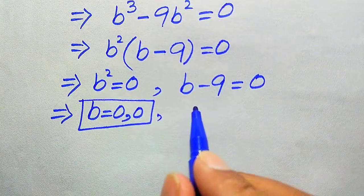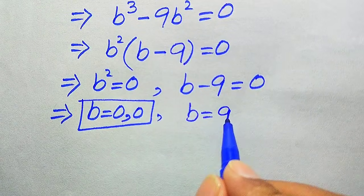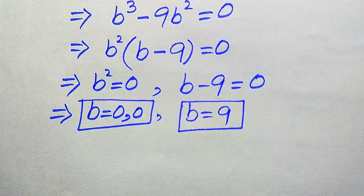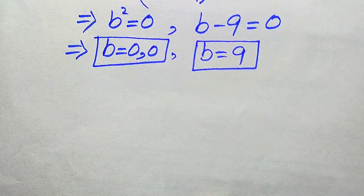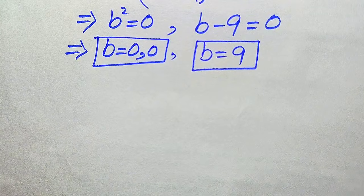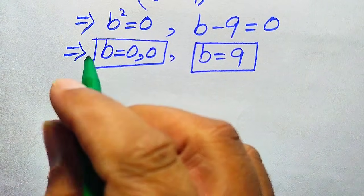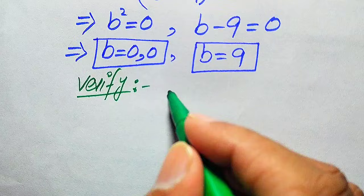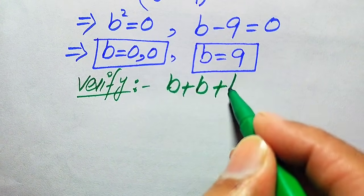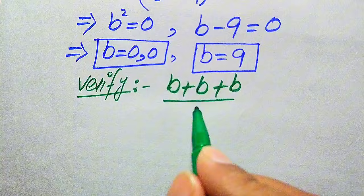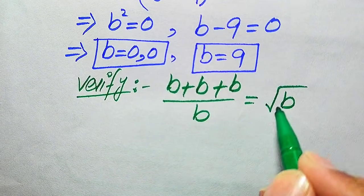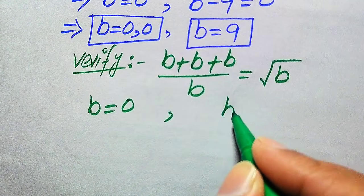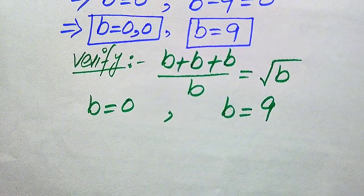So B equals 0 are two repeated real roots, and from the second case we get the third root B equals 9, which is a distinct real root. These are the three roots of the given equation. In the next step we verify whether these values of B satisfy the original equation: B plus B plus B divided by B equals square root of B.